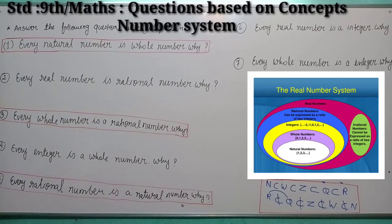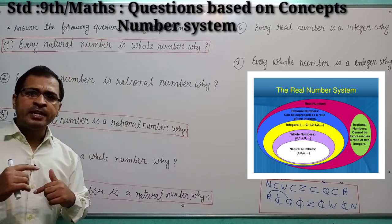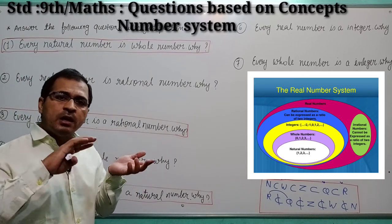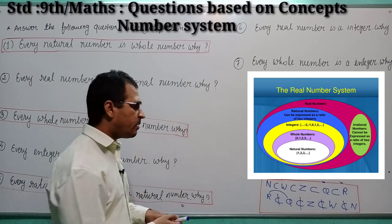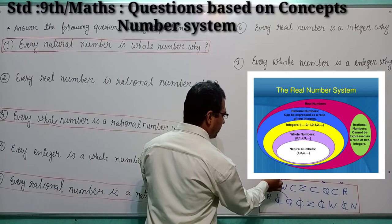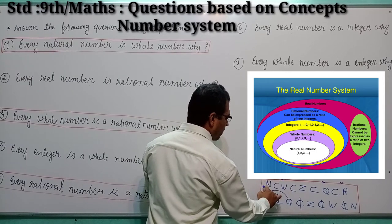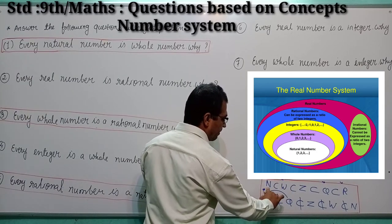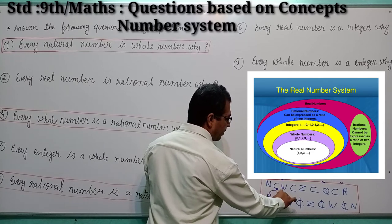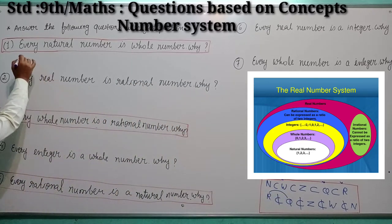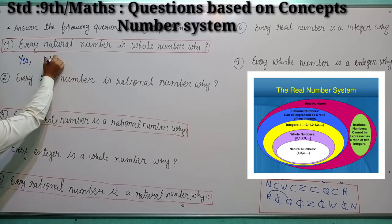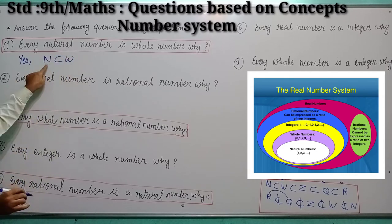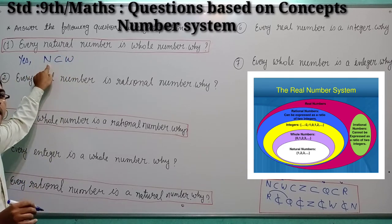In the very first question, you can see that every natural number is a whole number. All the elements of natural number are also elements of whole number. From here you can make clear that all the natural numbers are whole numbers. So your answer will be yes — every natural number is a whole number.